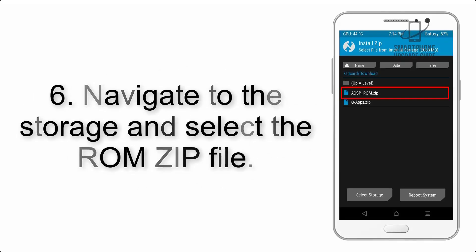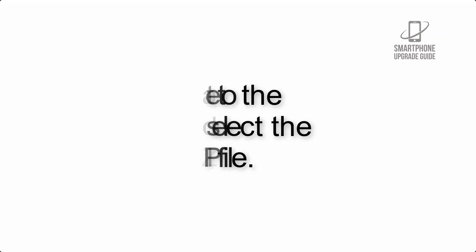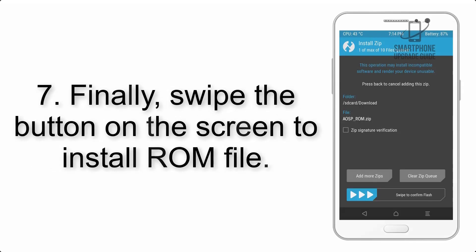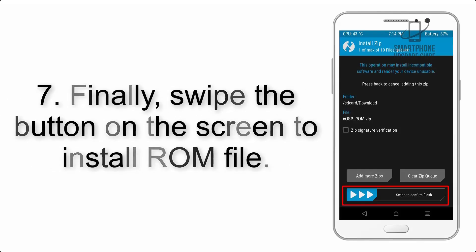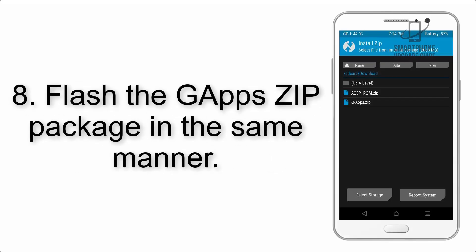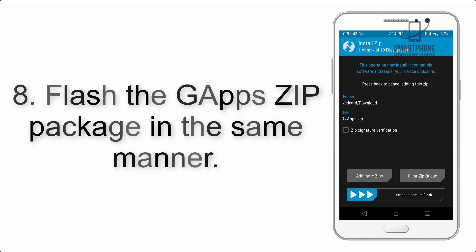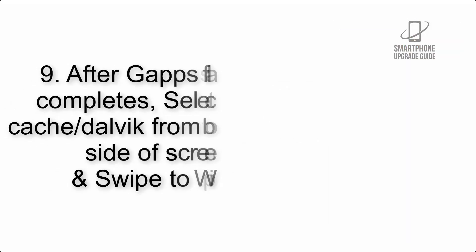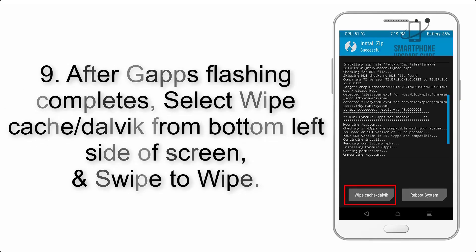Step 6: Navigate to the storage and select the ROM zip file. Step 7: Finally, swipe the button on the screen to install the ROM file. Step 8: Flash the GApps zip package in the same manner.